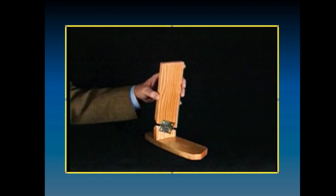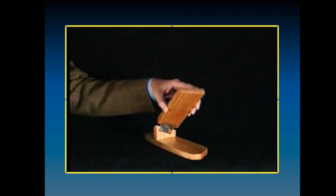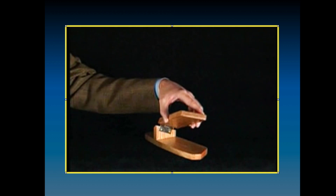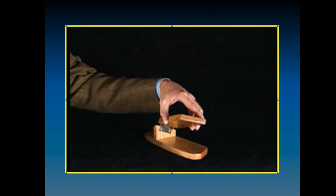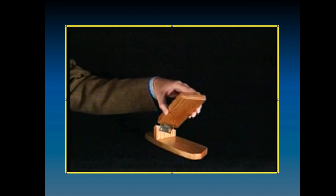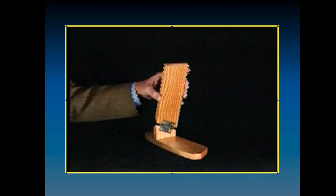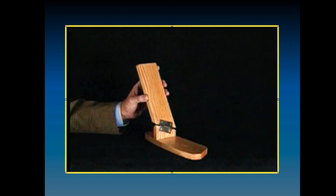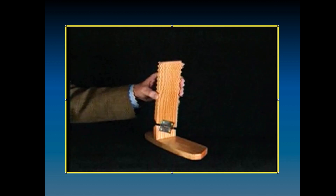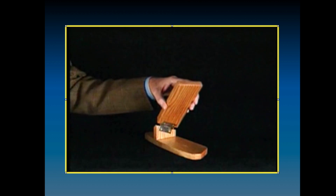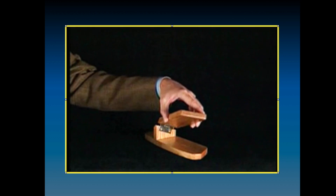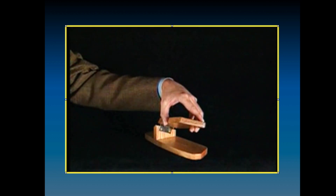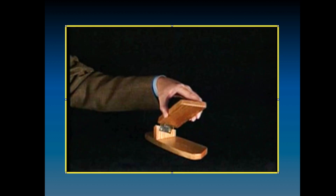With the foot fixed on the ground, dorsiflexion results in internal rotation of the tibia, while plantar flexion results in external rotation. This model illustrates this rotational relationship.